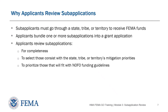Sub-applicants can't apply directly to FEMA for funding — they must go through a state, tribe, or territorial applicant in order to receive funds. Each year, the applicant bundles one or more sub-applications into a grant application and submits it to FEMA. When a sub-application is approved by FEMA, the funds pass through the applicant, now the grant recipient, to the sub-applicant, which is now the grant sub-recipient. Applicants check sub-applications for completeness. For more information on how a sub-applicant should review their own sub-application before submitting, see Module 6 in the sub-application web conference training series, also available on YouTube.